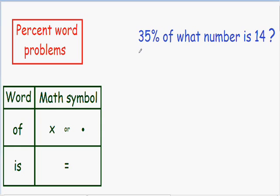So if we start from the left and go to the right, our first two words of this problem are 35% of. And if you look at the chart I wrote for you on the bottom left part of the screen, the mathematical symbol for the word of is the multiplication symbol. It's just an x or a dot. So instead of writing the word of, I'm going to use the multiplication symbol.